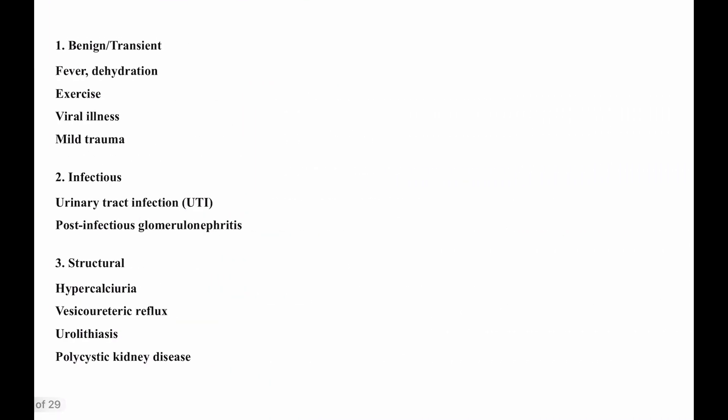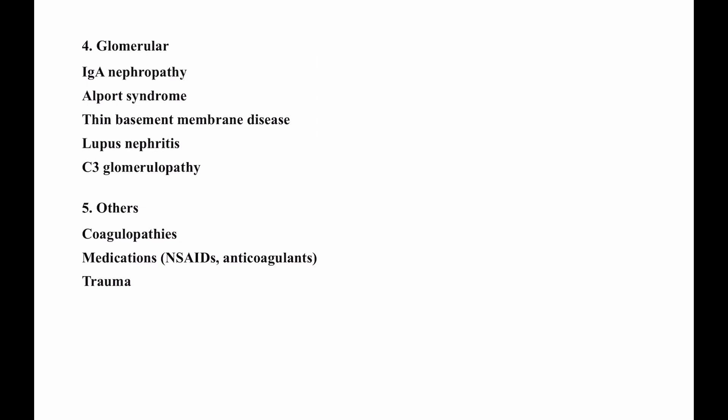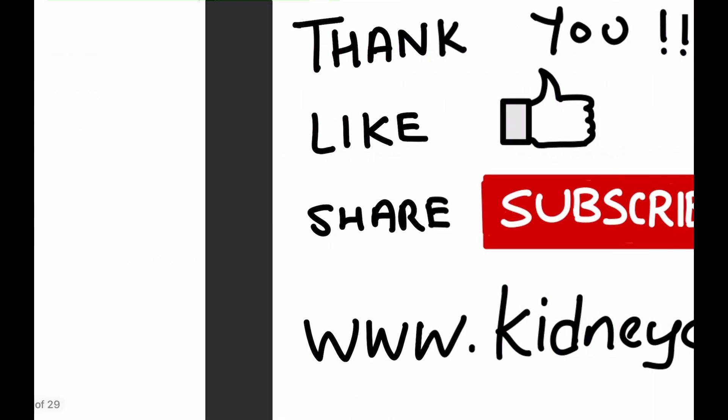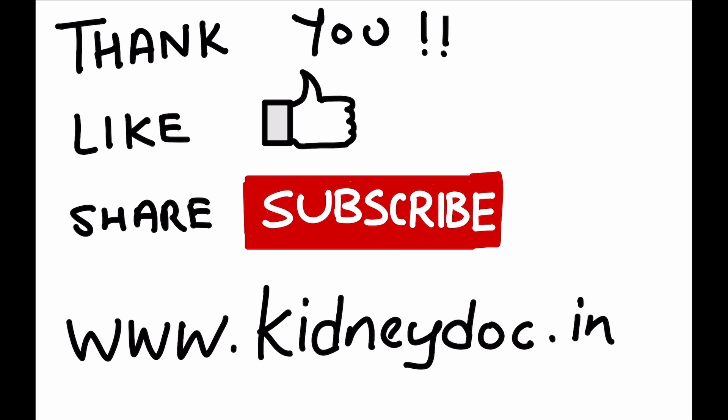Persistent microscopic hematuria is seen in 0.1 percent of school-age children and needs evaluation. Benign transient causes include fever, dehydration, exercise, viral illness, mild trauma, UTIs, or post-infectious glomerulonephritis. More important glomerular causes — which will be discussed in the future series — include IgA nephropathy, Alport syndrome, thin basement membrane disease, lupus nephritis, and C3 glomerulopathy (C3GN), all of which are very important in terms of long-term kidney prognosis.